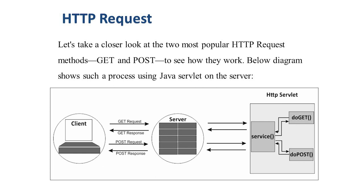The diagram shows the process using a Java servlet on the server. First, the client sends a request using the GET or POST method to the server. The server transfers this request to the HTTP servlet. In the HTTP servlet, we have a service method, which contains the doGet and doPost methods. With these methods, the request gathered from the client is handled, calculated, and converted to an HTTP response, which is then transferred back to the server via the service method. The server then transfers the GET or POST response to the client.